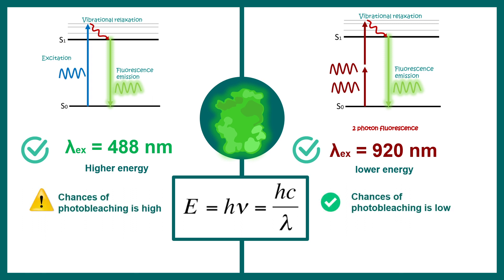First benefit is the chances of photobleaching is low because we are hitting the specimen with lower energy light. Whereas in one photon fluorescence the chances of photobleaching is high. This matters for a live specimen or where the signal is very low.